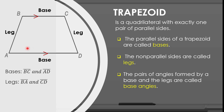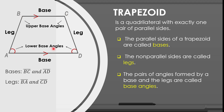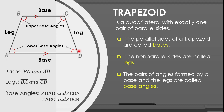We have here two pairs of base angles. The first one is the lower base angles — angle BAD and angle CDA. While the upper base angles are angle ABC and angle DCB. So, here are the bases, the legs, and the base angles of this given trapezoid.